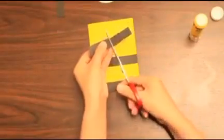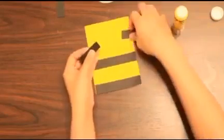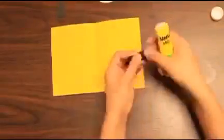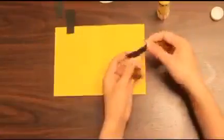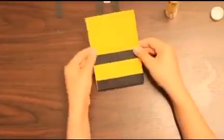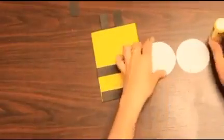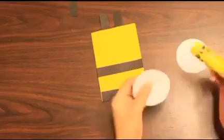Next, we will be making an antenna for our bee. Next, paste our two white circles on the back side of our bee.